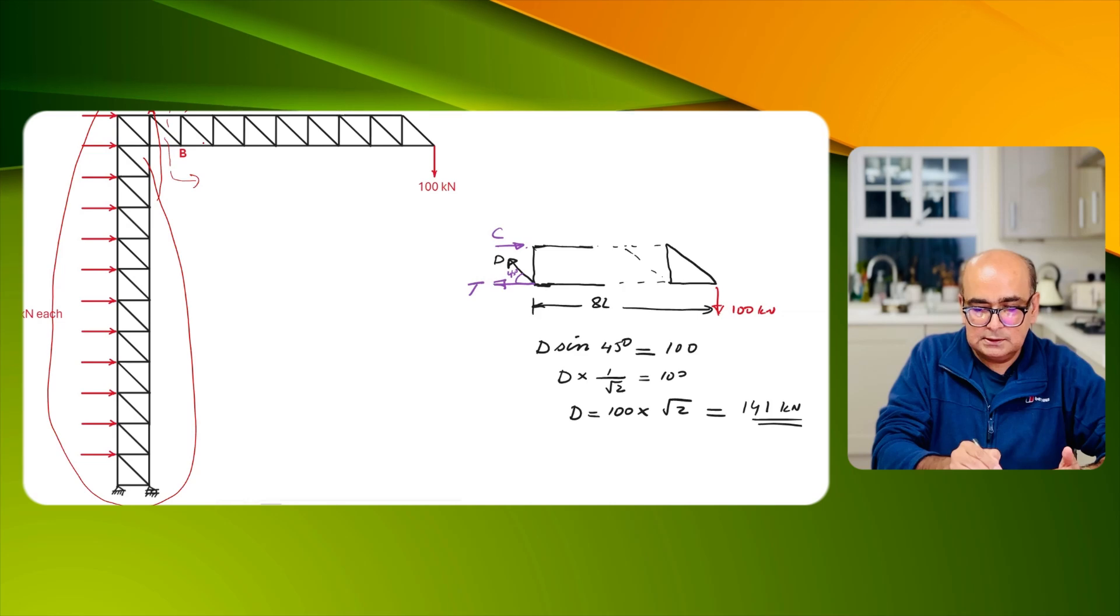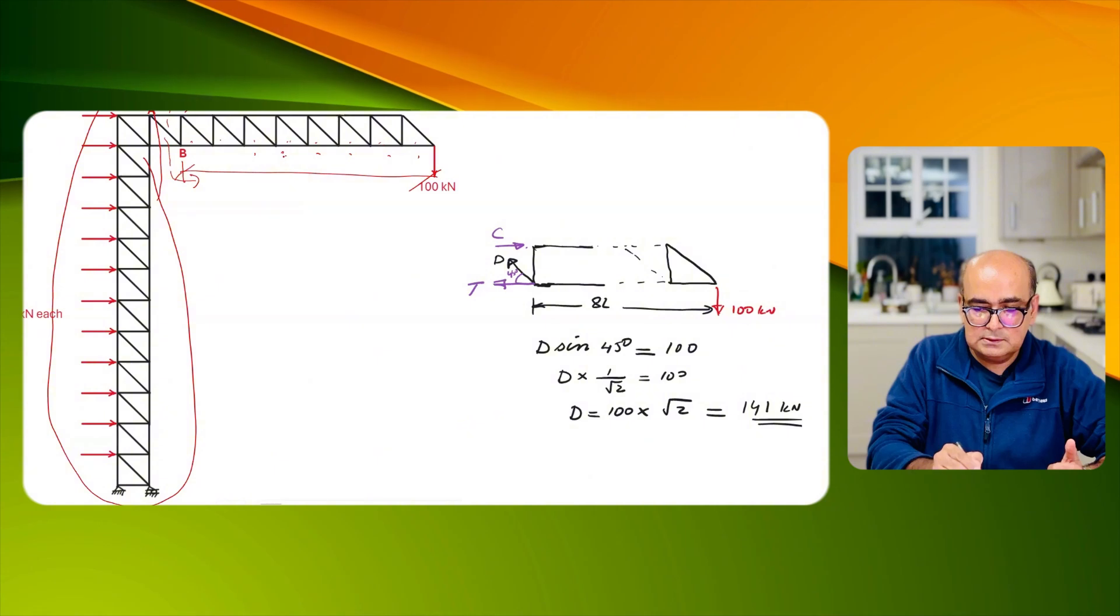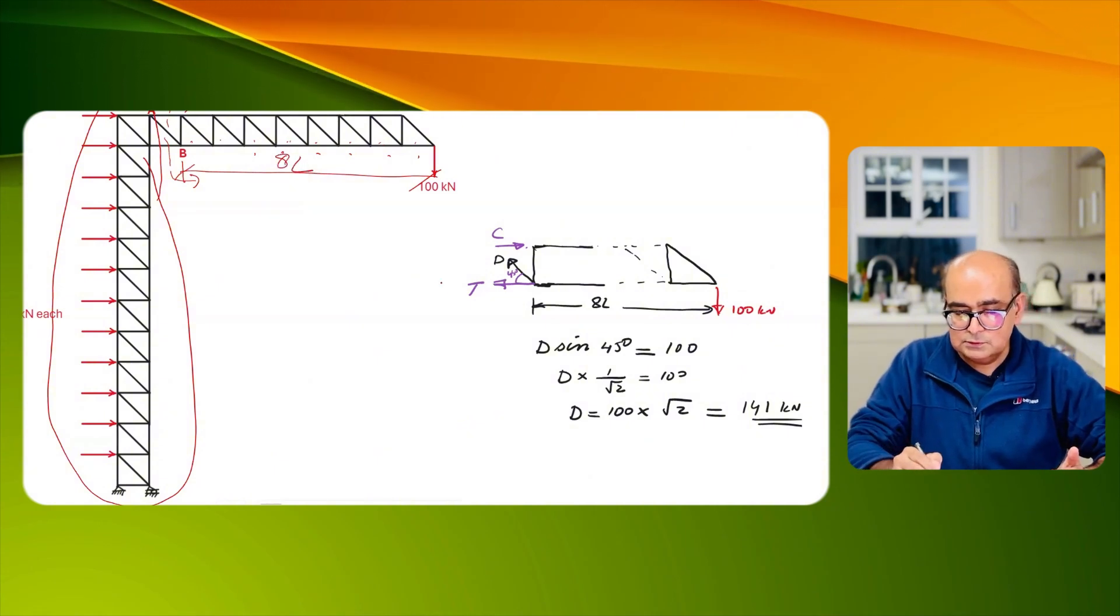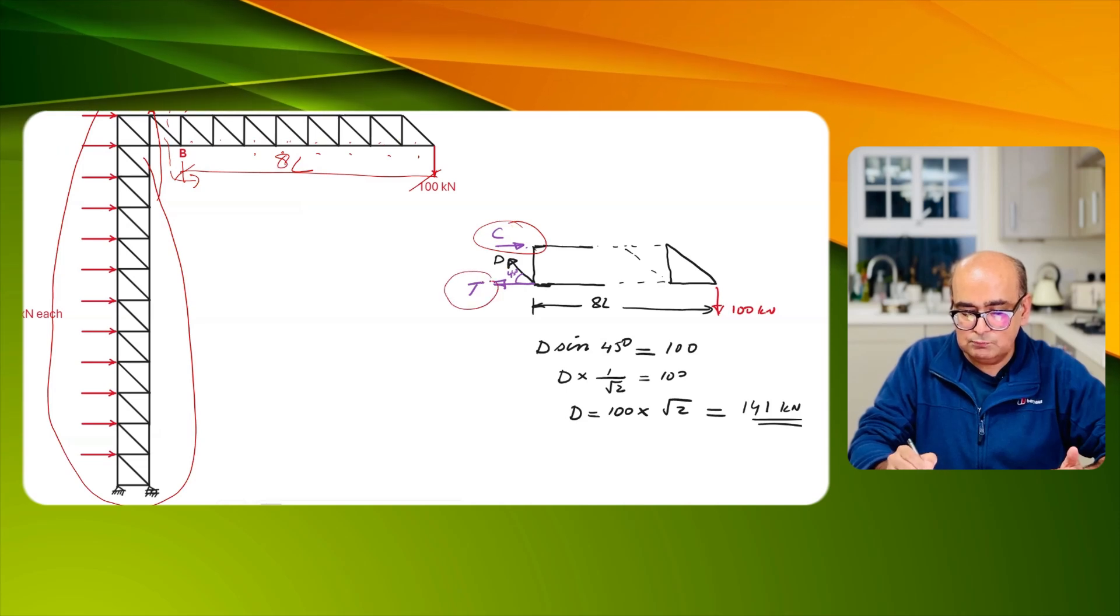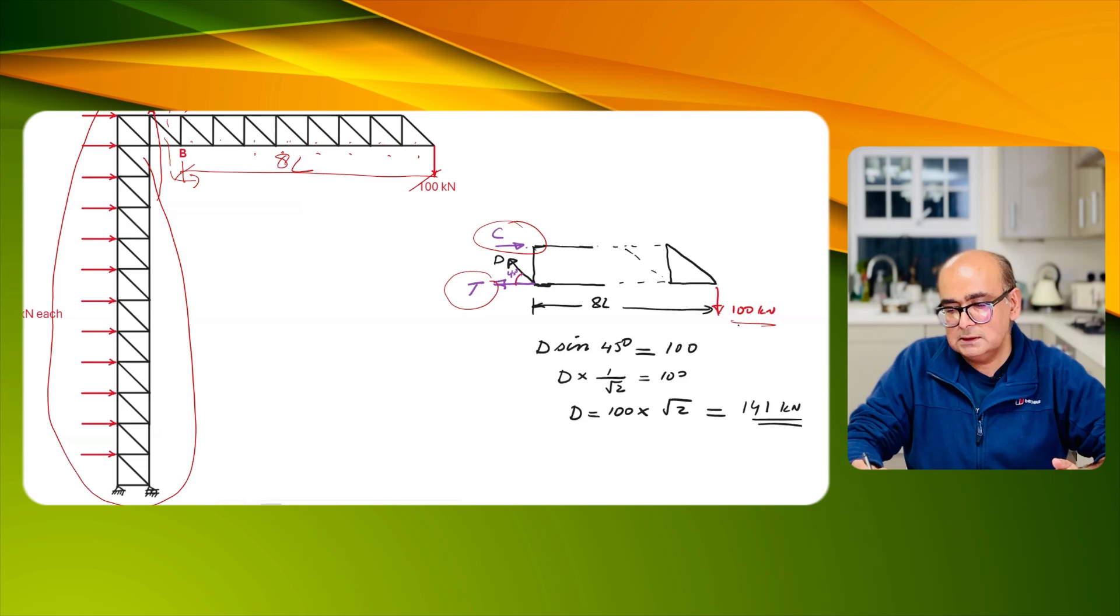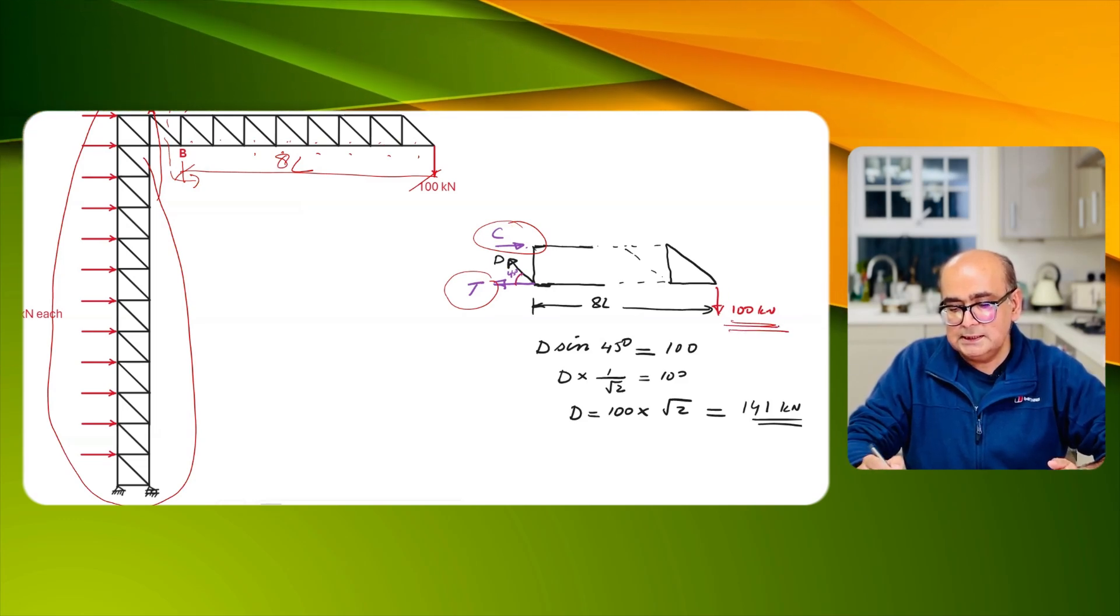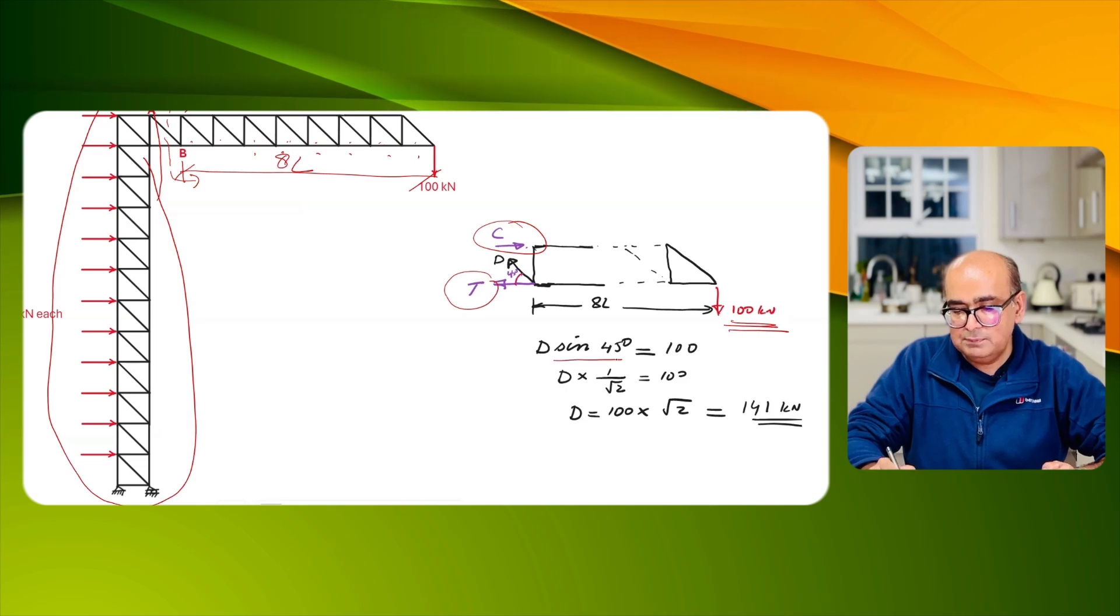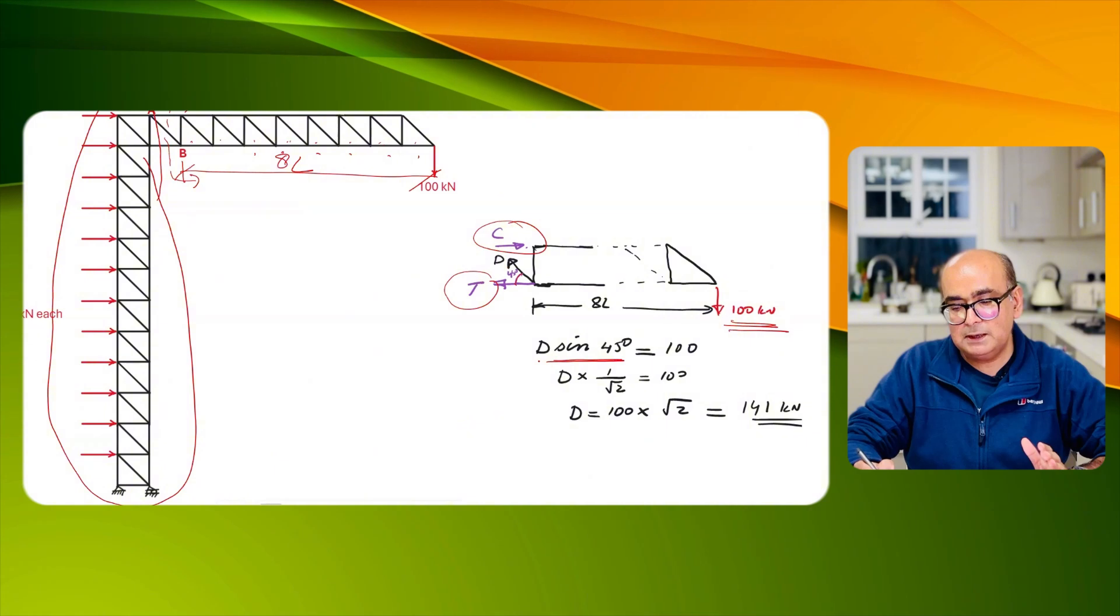So what I will do I will simply take a free body cut over here and the distance between B and this point is 8L. So if we isolate this you will see that at top we have compression, bottom we have tension, and diagonal is inclined at 45 degrees. 100 kN load is applied.